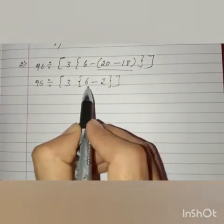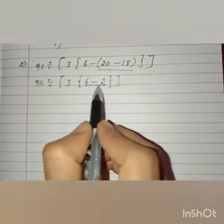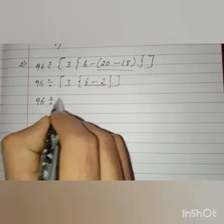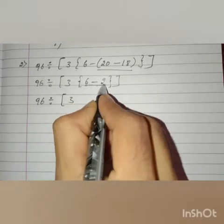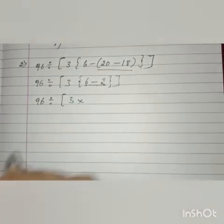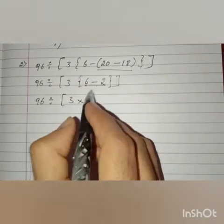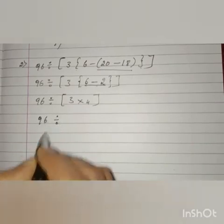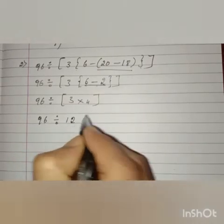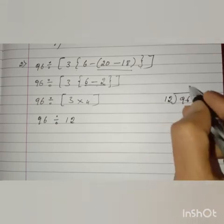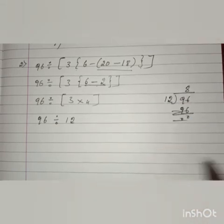After removing the common bracket, we remove the curly bracket. The operation given is subtraction: 6 minus 2 is 4. If there is no symbol between brackets, we put a multiplication symbol, so 3 times 4 is 12. Now 96 divided by 12: 12 eights are 96, so the answer is 8. Got it, children?